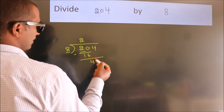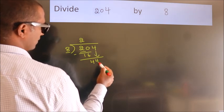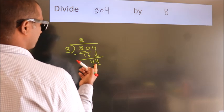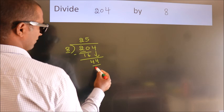After this, bring down the next number. So bring 4 down. So 44. A number close to 44 in the 8 table is 8 fives, 40.